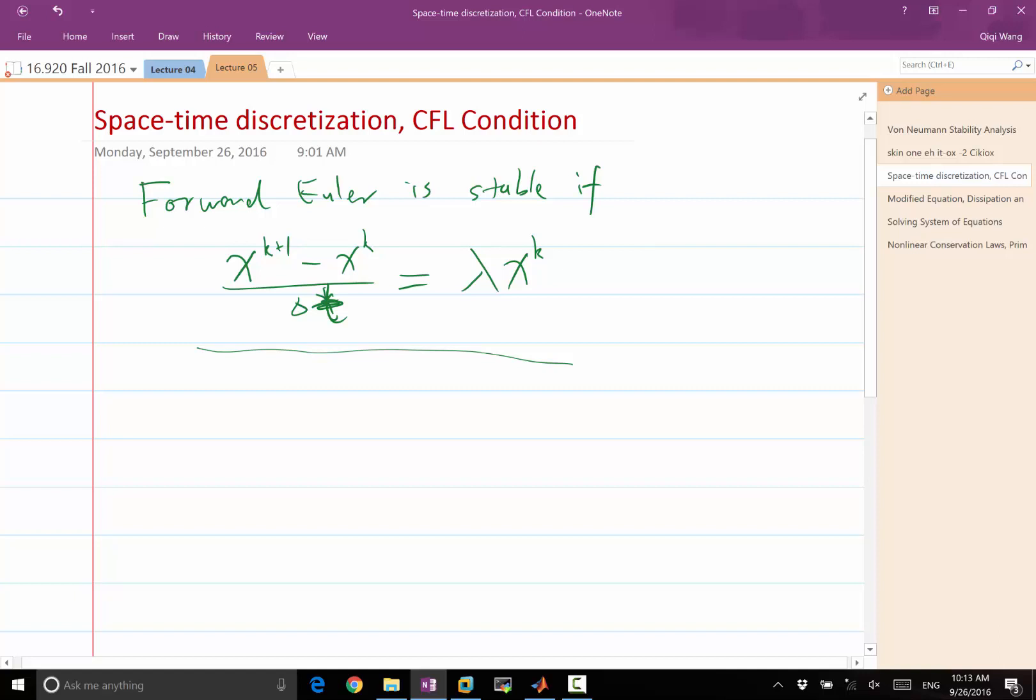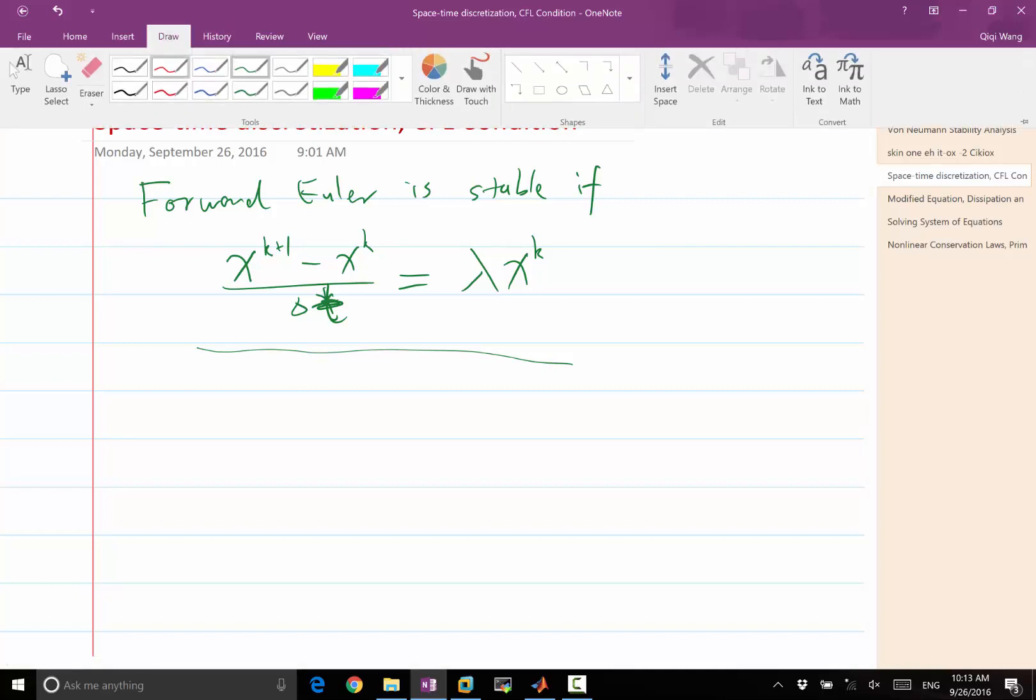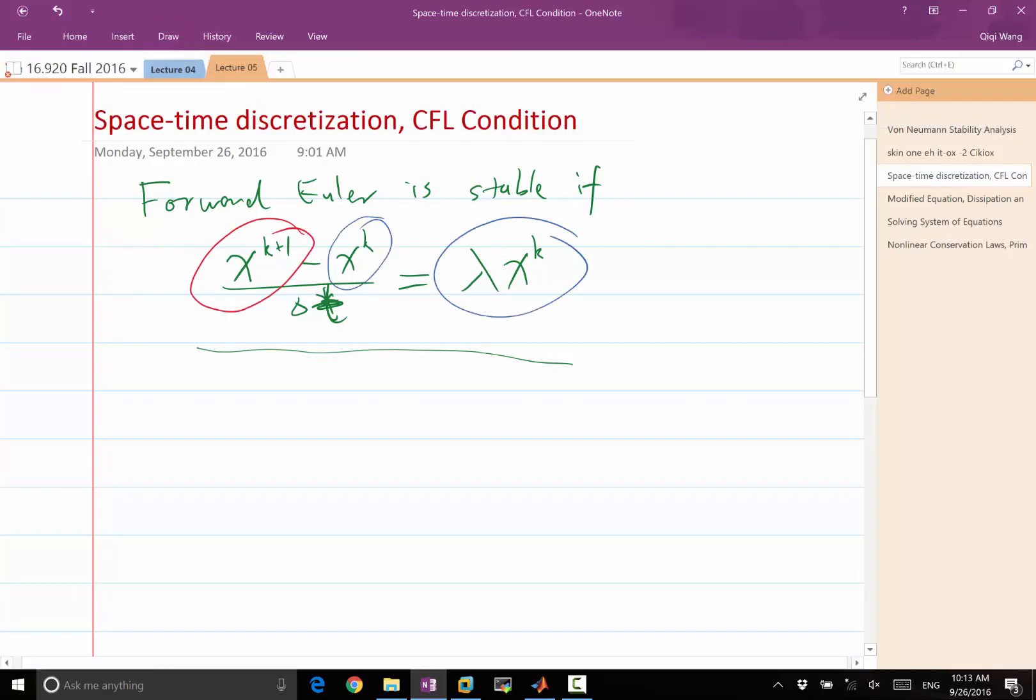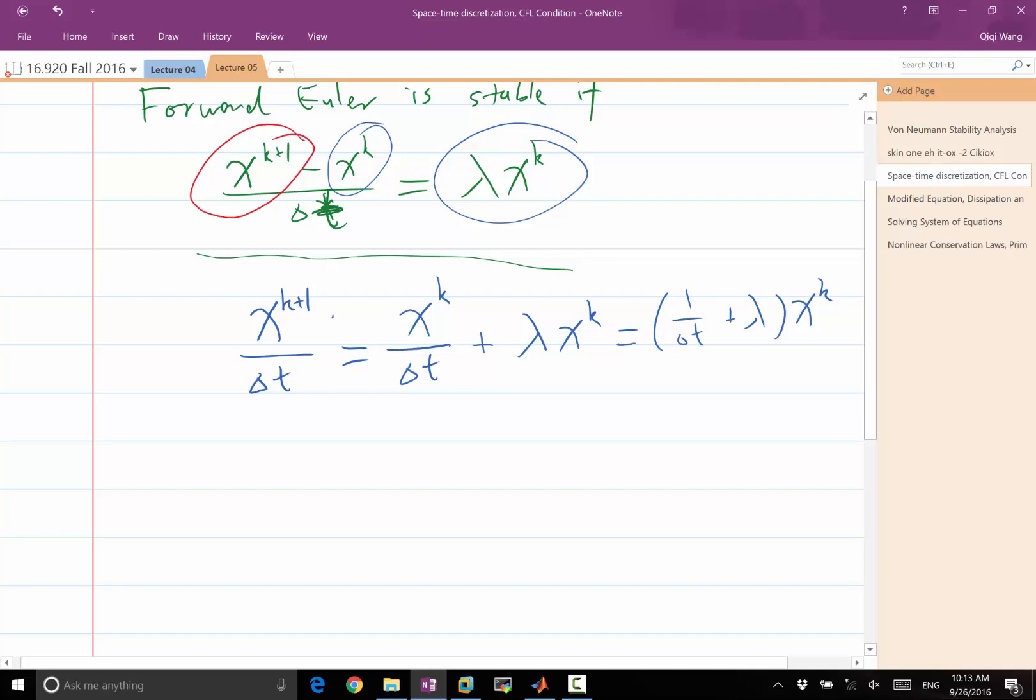So I'm going to use red to specify the unknown and blue to specify the known. So the way to analyze the stability is move all the unknowns to the left hand side and move all the known to the right hand side. So xk over delta t is moved to here. Bless you. And lambda xk is over here. Which is combined into 1 over delta t plus lambda times xk. And also multiply the delta t on both sides. So we get xk plus 1 is equal to 1 plus delta t lambda times xk.